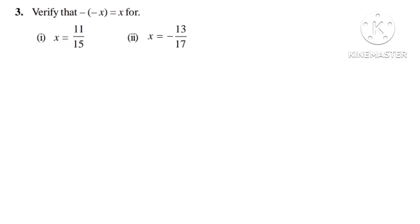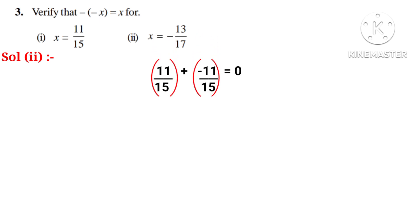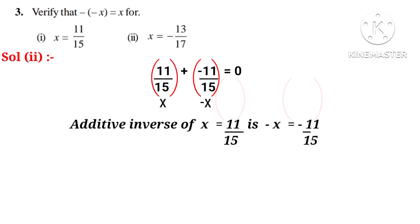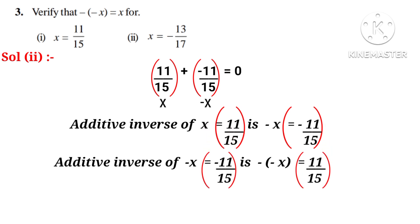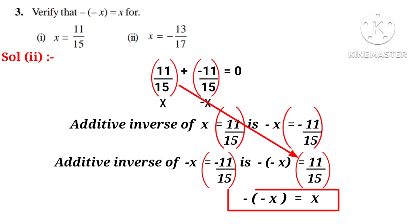Now let us do the third problem: verify that minus of minus x is equal to x. Solution 1: x is equal to 11 by 15. We know that 11 by 15 plus minus 11 by 15 equals 0. Taking 11 by 15 as x, then minus 11 by 15 is minus x. So the additive inverse of x is minus x, that is minus 11 by 15. And the additive inverse of minus x (minus 11 by 15) becomes 11 by 15, which is x. So minus of minus x equals x. Hence it is proved.